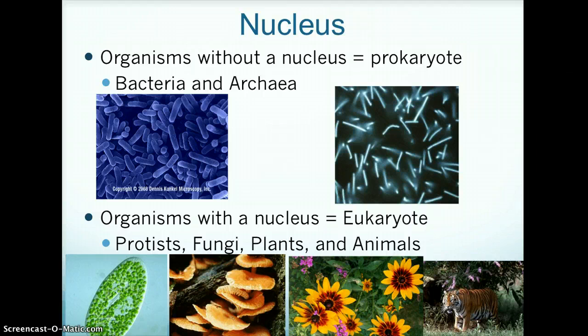Organisms with a nucleus are called eukaryotes. The kingdoms protista, fungi, plantae, and animalia contain eukaryotes.